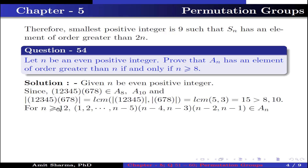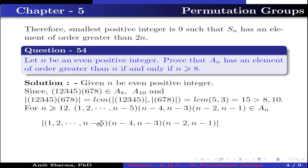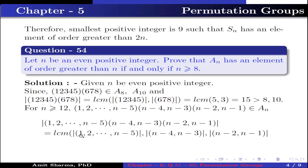For n greater than or equal to 12, the product of permutation (1 2 ... n−5)(n−4, n−3)(n−2, n−1) has order equal to the lcm of the order of (1 2 ... n−5) and the order of (n−4, n−3) and the order of (n−2, n−1), which equals lcm(n−5, 2, 2) = 2(n−5), which is greater than n.